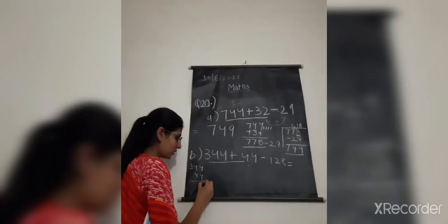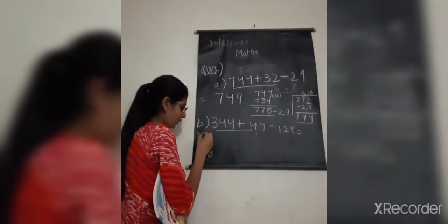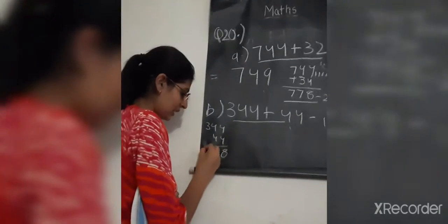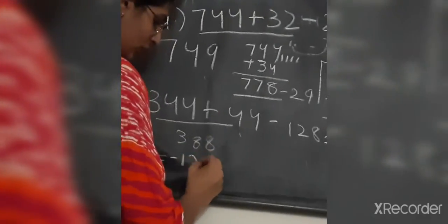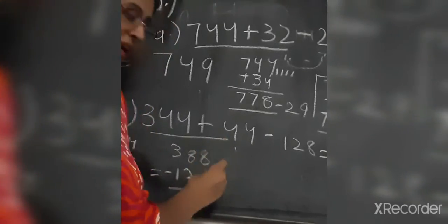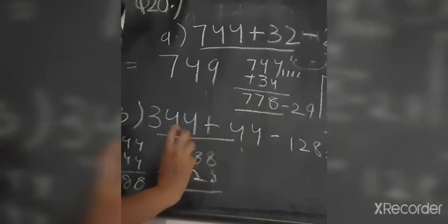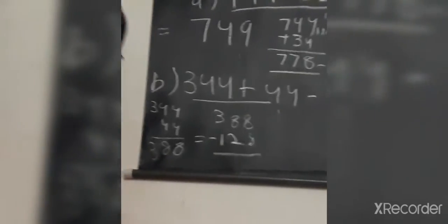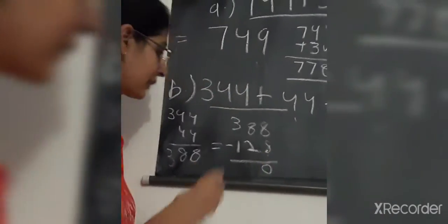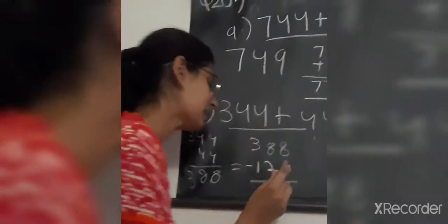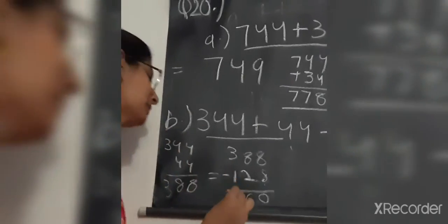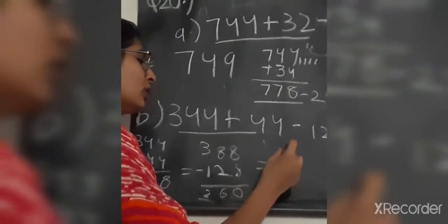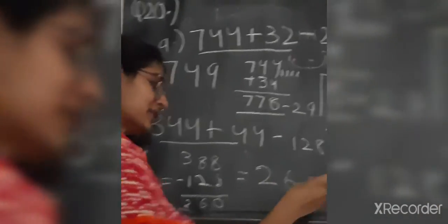So 4 and 7 gives 7, minus 4 is 3. Now 4 plus 4 equals 8, and 3 plus 3. So now we have 388 minus 128: 8 minus 8 is 0, 8 minus 2 leaves 6, and 3 minus 1 leaves 2. So write down 0 there — the answer should be 260.